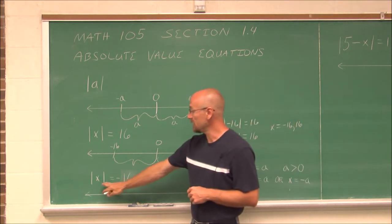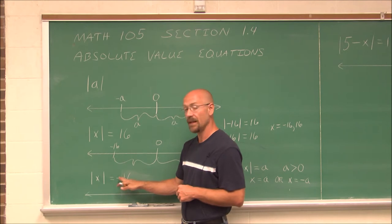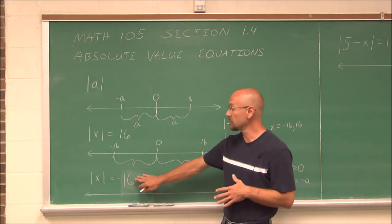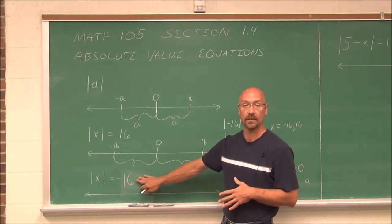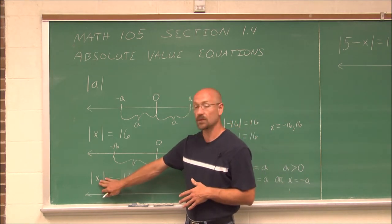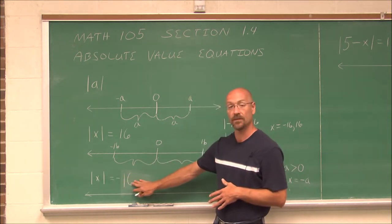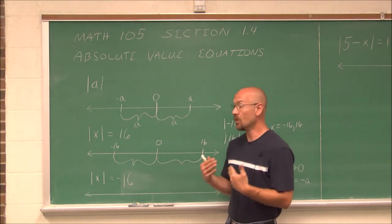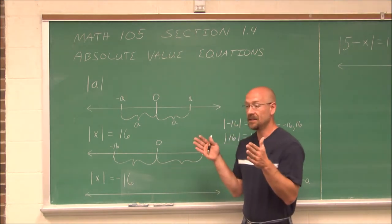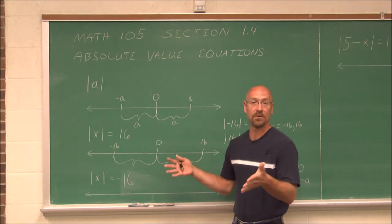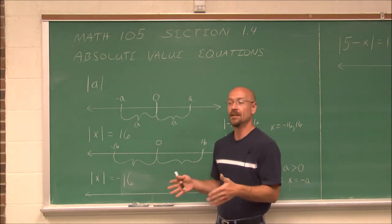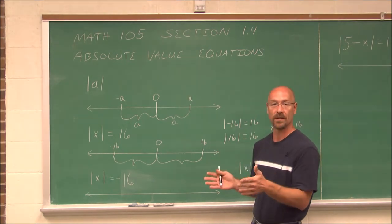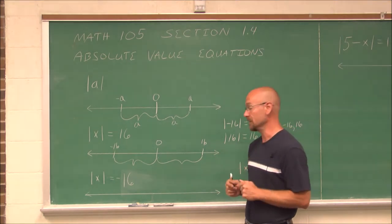But what if the absolute value of x equals a negative value? This has no real solution — it does not make sense. Because if we're asking for a distance and we're given a negative value, an absolute value can never be negative. No one's ever going to tell you they need negative 3 feet of a board cut. It's going to be 3 feet — it's an absolute value, a distance.